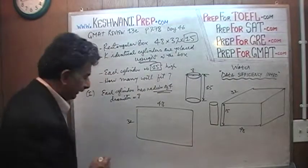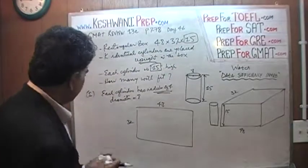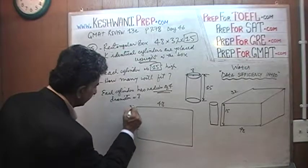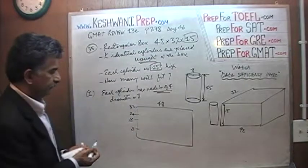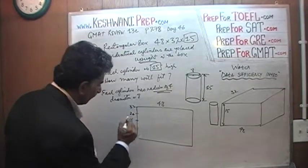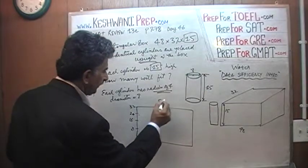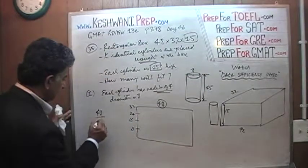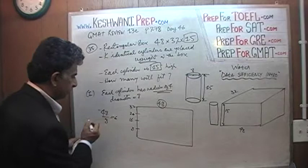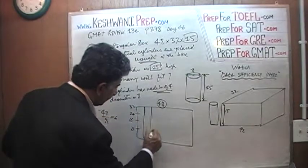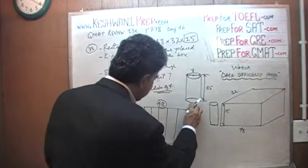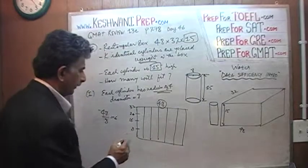And wouldn't you know it — 32 is an exact multiple of 8: 8, 16, 24, 32. So we will have 4 rows this way. And 48 divided by 8 is 6, which means we are going to have 6 columns.